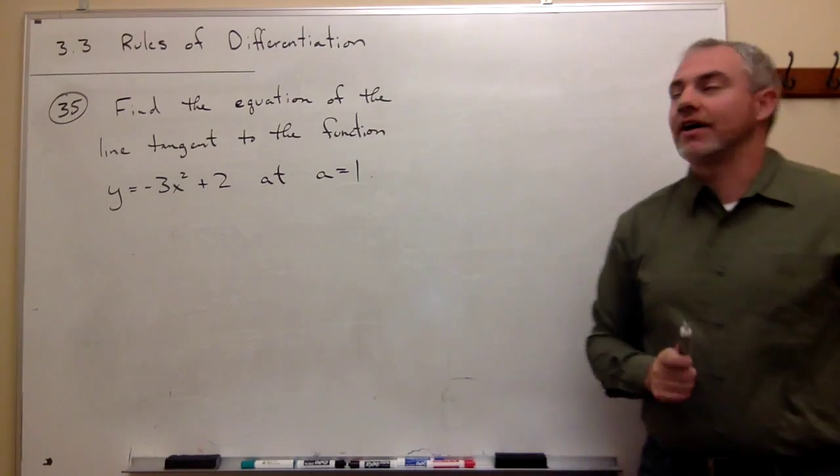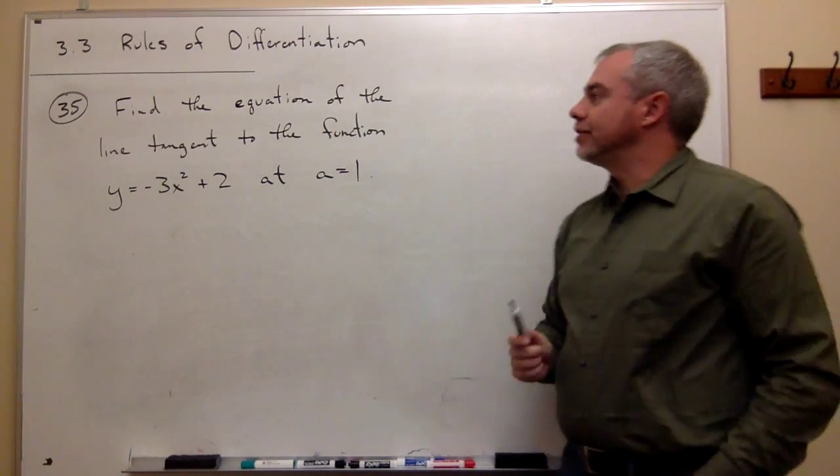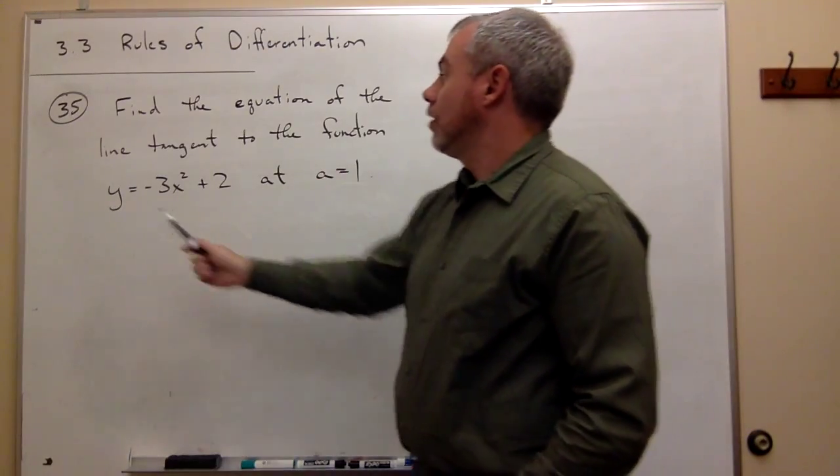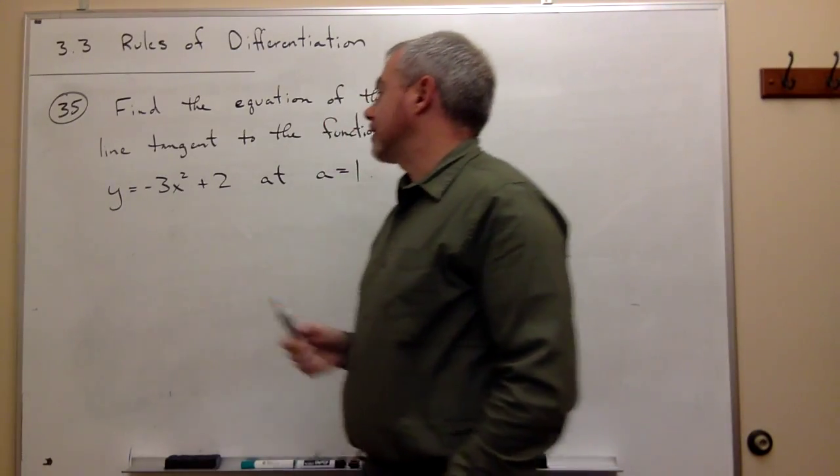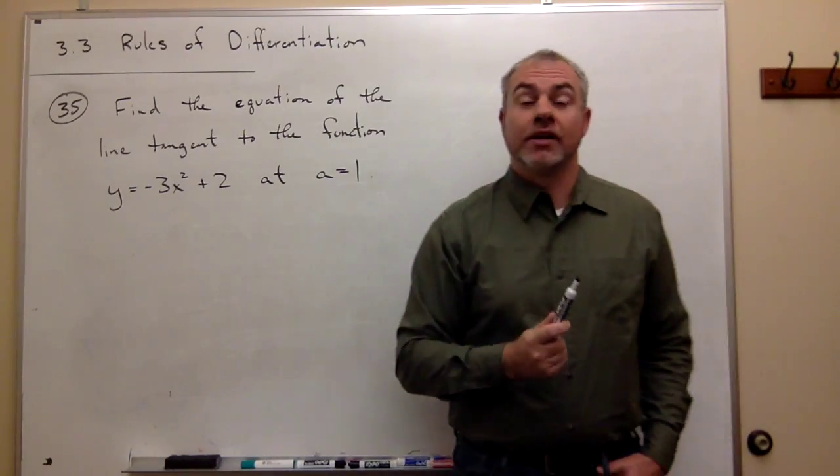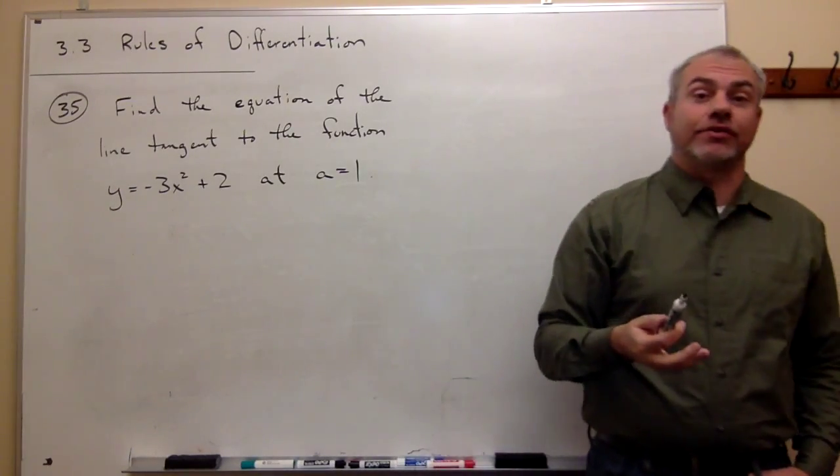In problem number 35, we want to find the equation of the tangent line to the function y equals negative 3x squared plus 2 at the point where x equals 1.